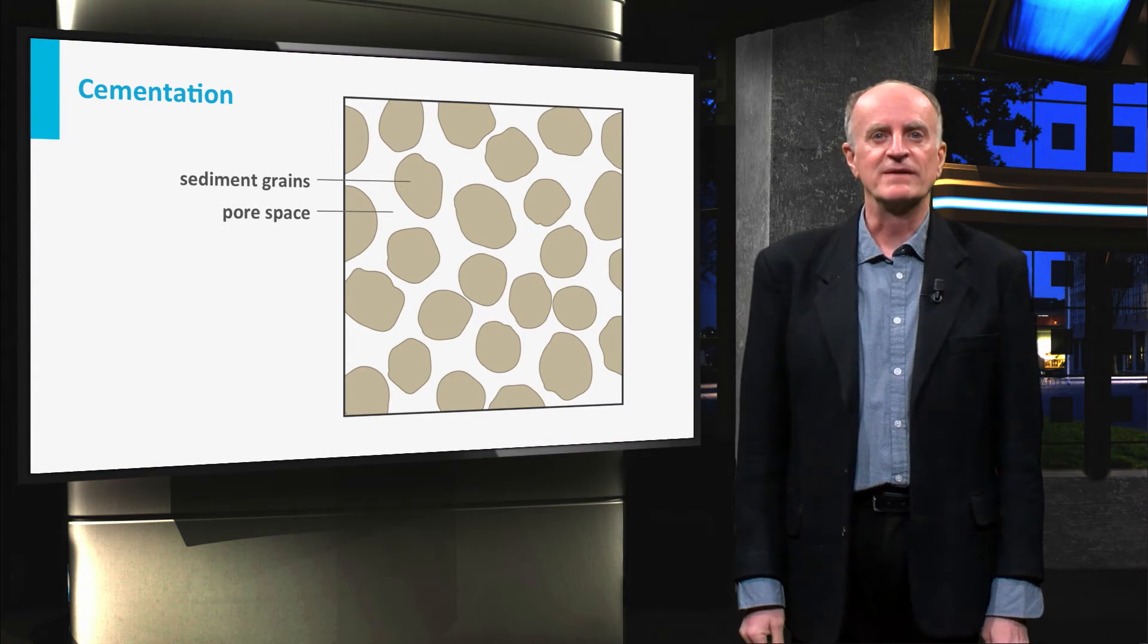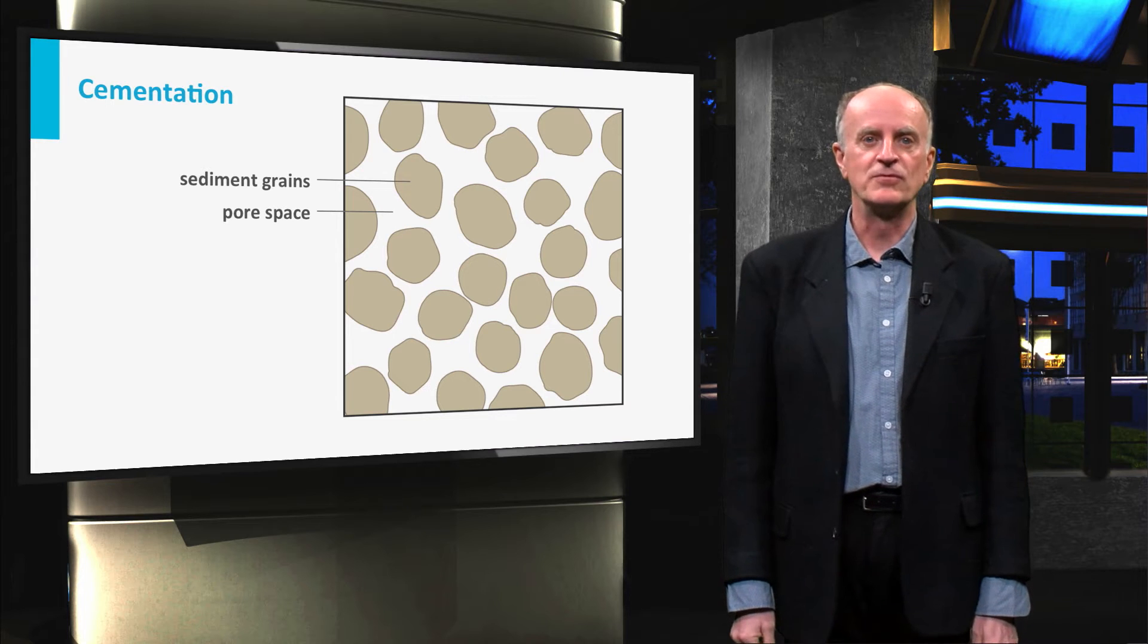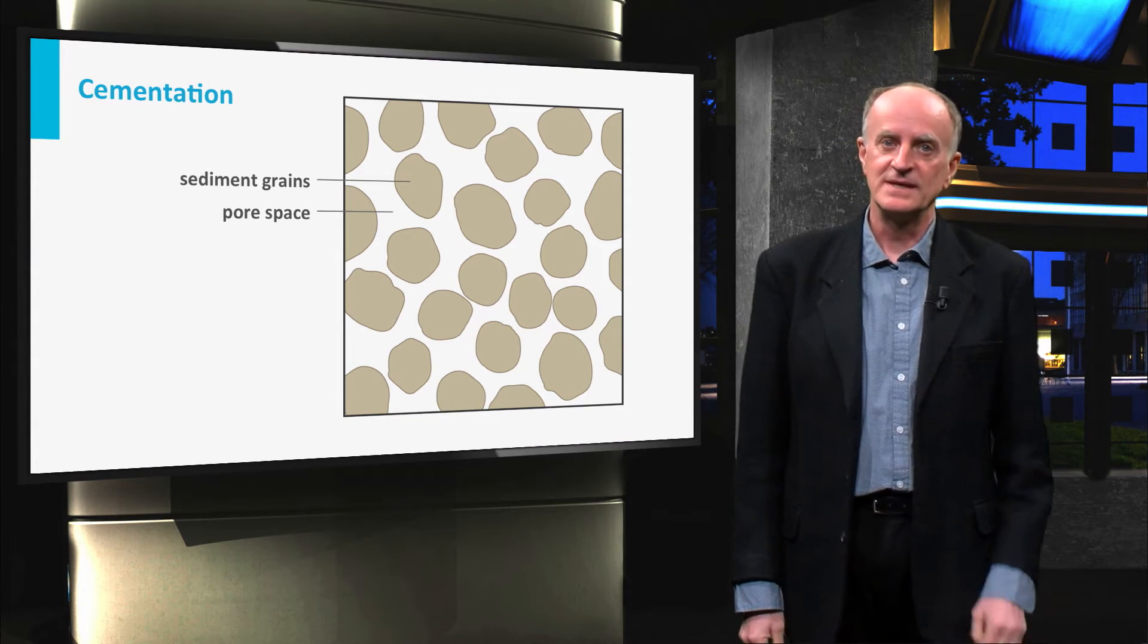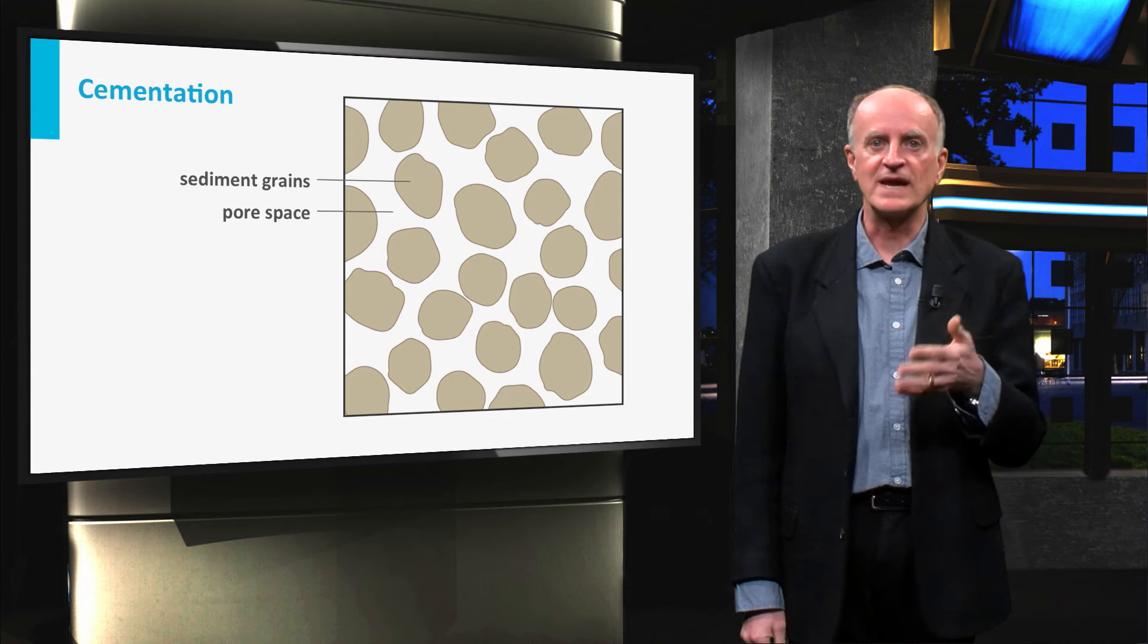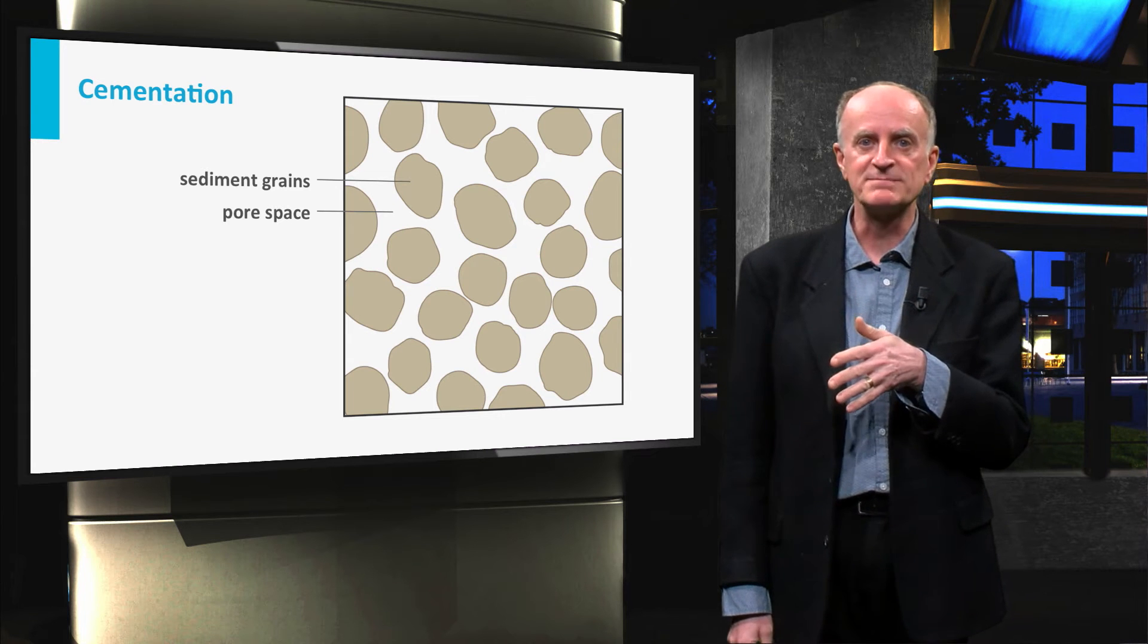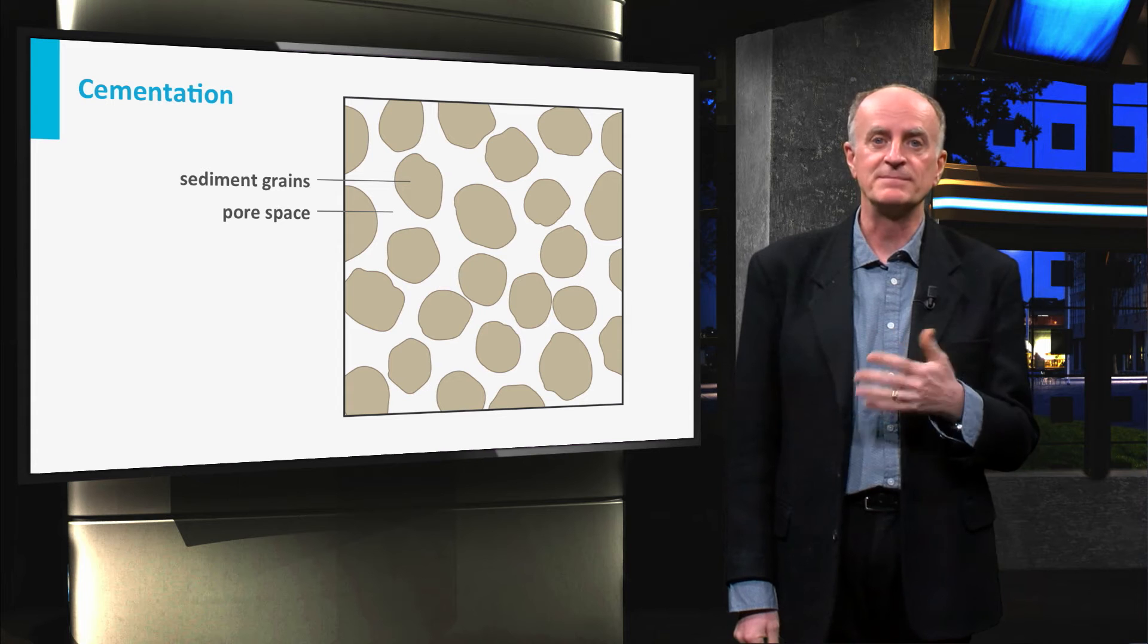In previous slides, we have looked at different types of porosity and how pores are formed. Cementation, that is the precipitation of calcite or quartz in the empty space between the grains, is another process of the greatest importance, one that destroys porosity.